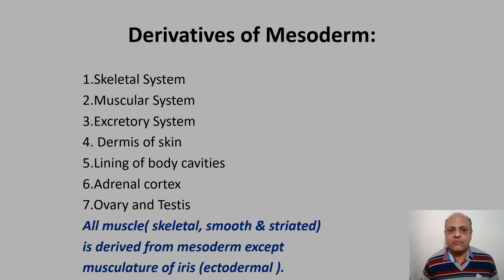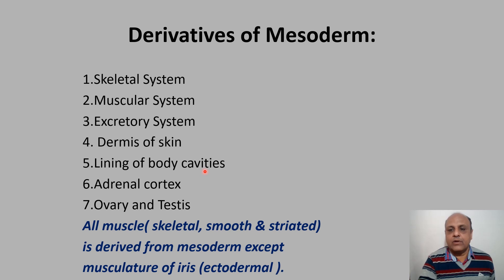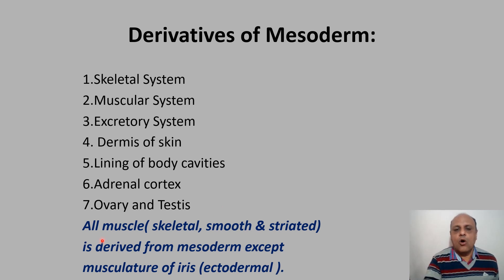The derivatives of mesoderm include the skeletal, muscular, and excretory systems. The dermis of skin is a mesoderm derivative — remember that ectoderm gives epidermis while mesoderm gives dermis. The lining of body cavities — pericardial, peritoneal, and pleural — is derived from mesoderm, as are the adrenal cortex, ovaries, and testes. All muscle tissue — skeletal, smooth, or striated — is derived from mesoderm, except the musculature of the iris, which is ectodermal.